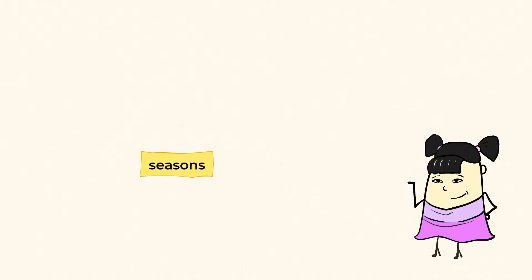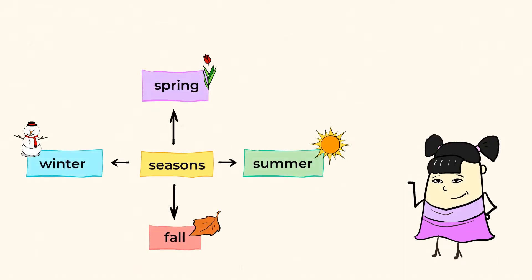Each season - spring, summer, fall, and winter - has different types of weather. But how does the Earth change as the seasons change? Let's make some observations and find out. An observation is when you look carefully and write down what you notice.